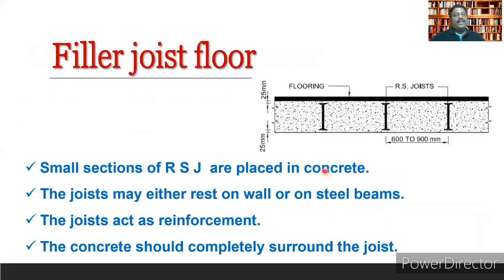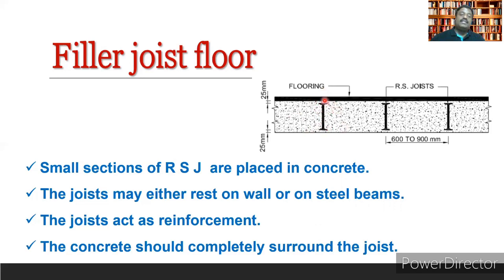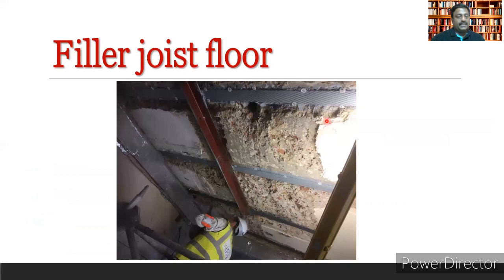The next type is the filler joist floor. The filler joist floor uses rolled steel joist sections embedded in a concrete room or slab. The steel joists are embedded in a small part of the wall for support. It is considered an early form of composite floor construction.